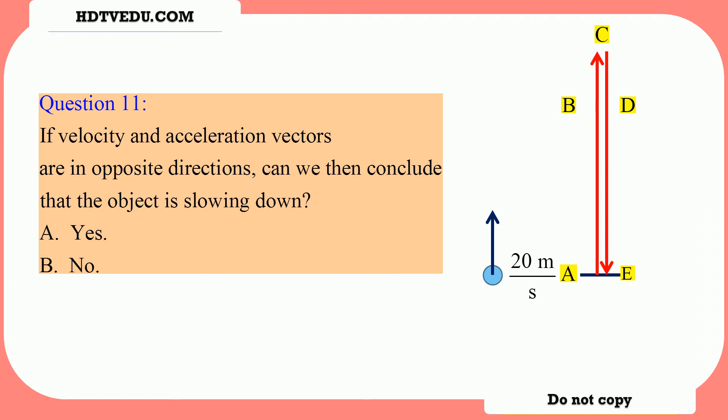At point C, velocity is zero and acceleration is along negative Y. From C to D, velocity is along negative Y and acceleration is also along negative Y — both pointing down — so the object increases speed. From D to E, velocity is vertically down and acceleration due to gravity is also along negative Y, so velocity and acceleration are in the same direction and the object increases its speed.